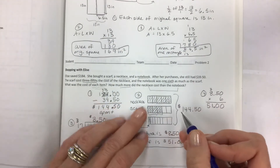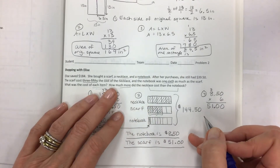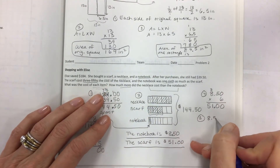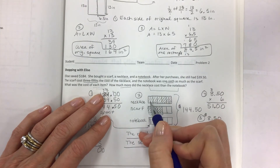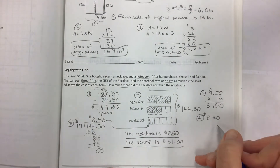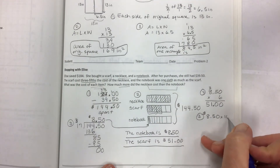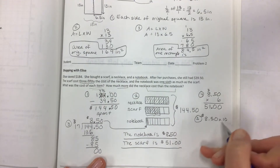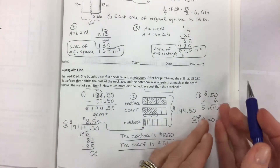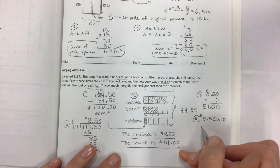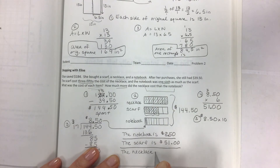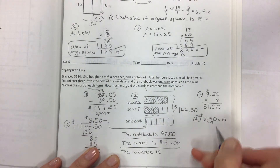The necklace is ten units: 8.50 times 10. When you multiply by 10, move the decimal one place to the right. The necklace costs $85.00.